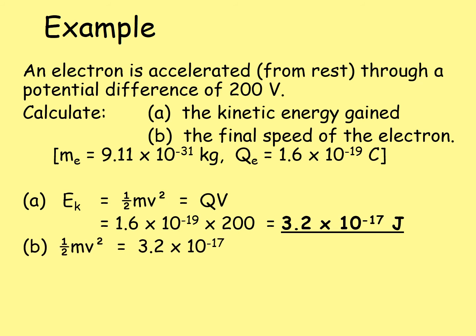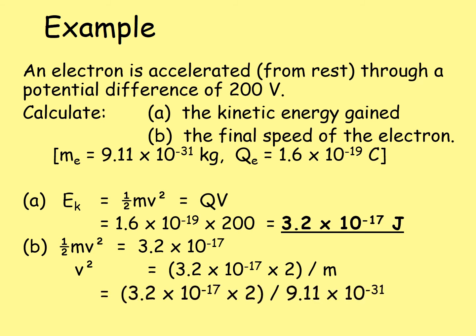We know the kinetic energy is 3.2 × 10⁻¹⁷ joules, so we can use this to find v, the final speed of the electron. v² equals 3.2 × 10⁻¹⁷ multiplied by 2 — moving the half from the left-hand side — divided by the mass of the electron, 9.11 × 10⁻³¹. The value of v is equal to 8.4 × 10⁶ metres per second. A common mistake at this point is finding v² and forgetting to square root to find v.